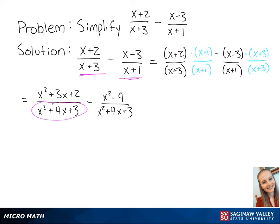Now we have a common denominator, so we can combine both of the fractions. This is going to give us x squared plus 3x plus 2 minus x squared plus 9 all over x squared plus 4x plus 3.